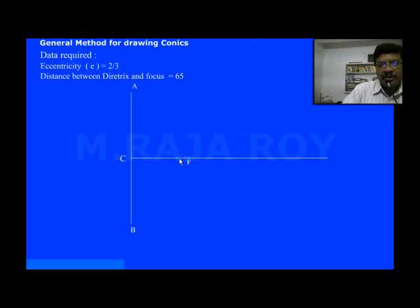Now divide this CF into some number of equal parts. That number you decide based on the SNCT value. Here SNCT is 2 by 3, so add numerator and denominator and you get 5. So divide CF into 5 equal parts.